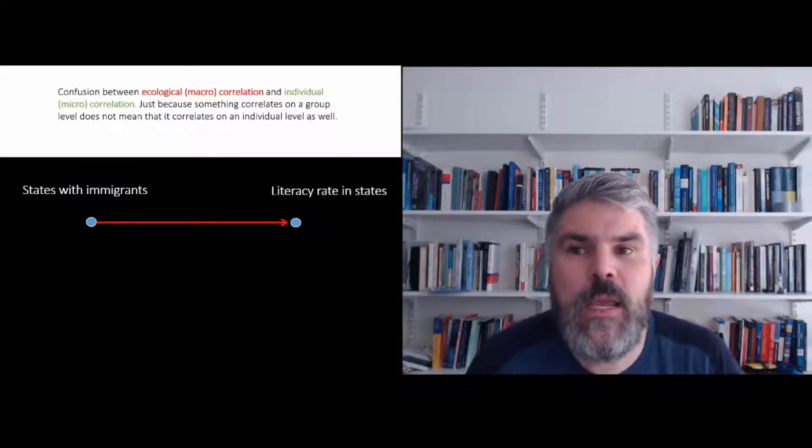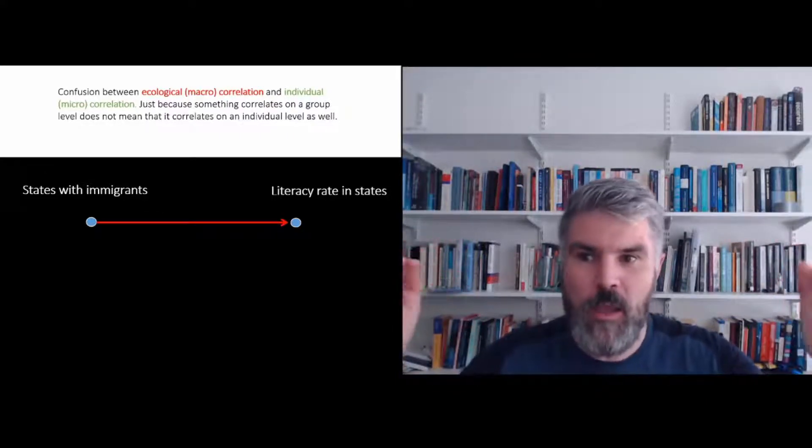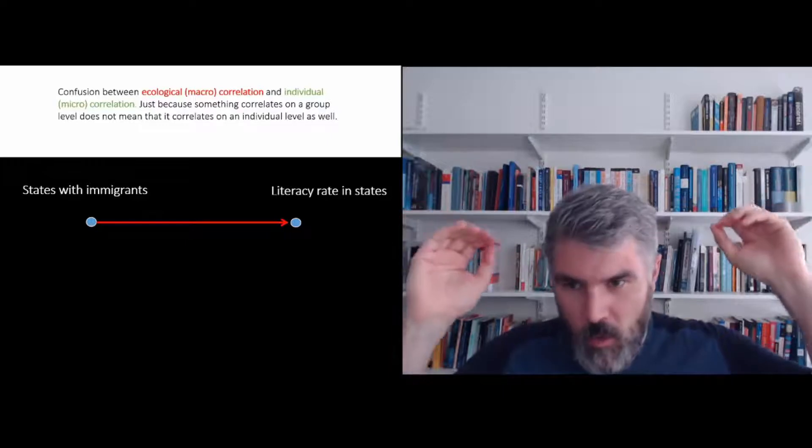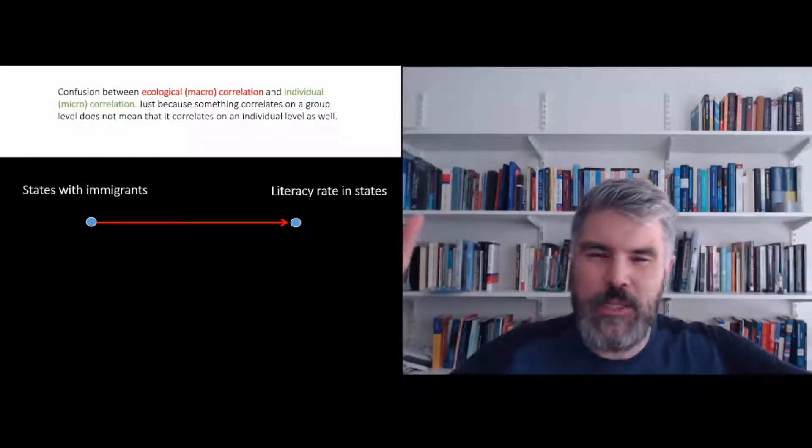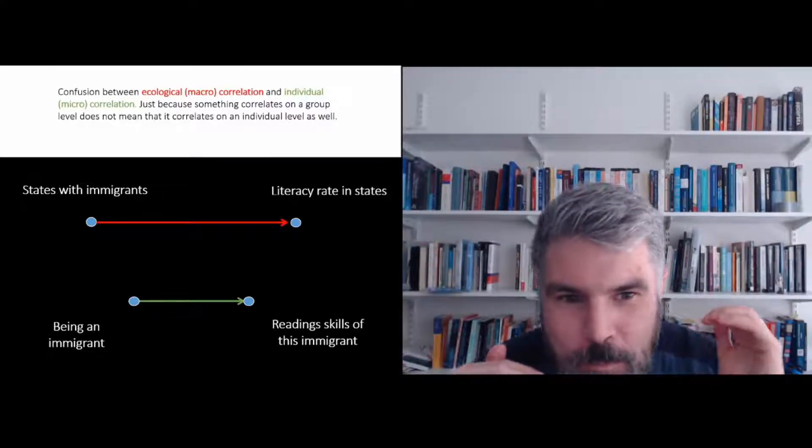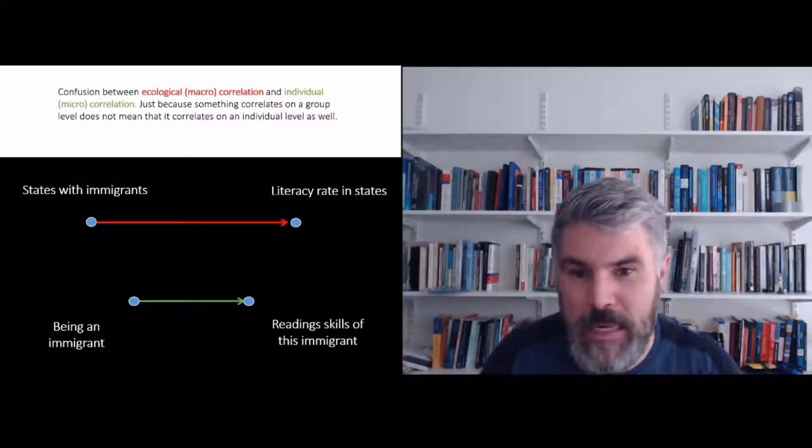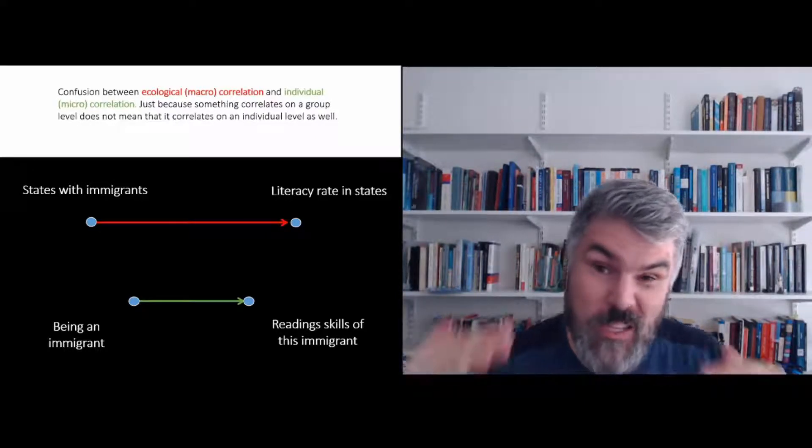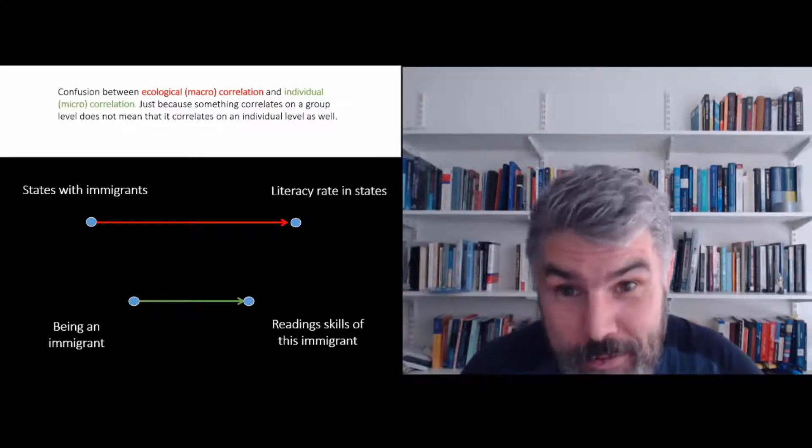When we look at this in a more conceptual way, we have a correlation at the macro or ecological level - the percentage of immigrants in the state and the literacy rate in that state. But what we shouldn't do is confuse it with a correlation at the micro level, which is being immigrant and the ability to read or not to read. These things happen at different levels and they can go in completely different directions.